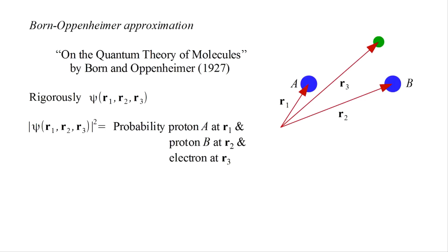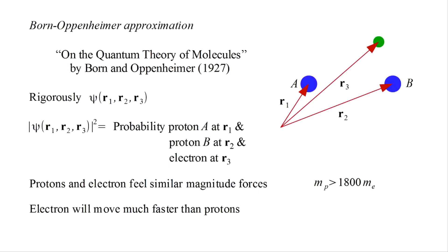Born and Oppenheimer presented a detailed analysis and methodology for simplifying a molecular wave function that essentially boils down to the following argument. Because they have the same magnitude of electric charge, the protons and electrons feel similar magnitude forces. But the protons are more than 1800 times as massive, so we expect that the electron will move much faster than the protons.